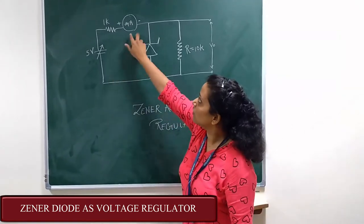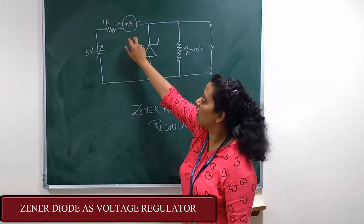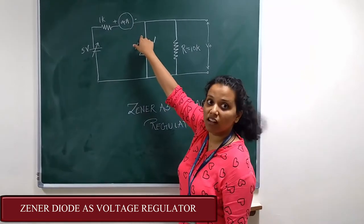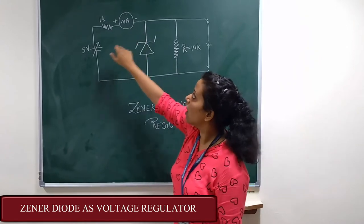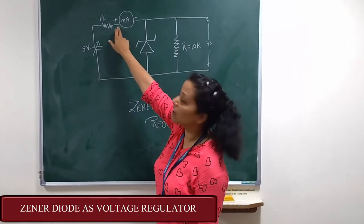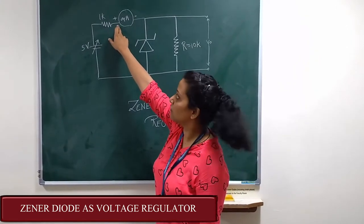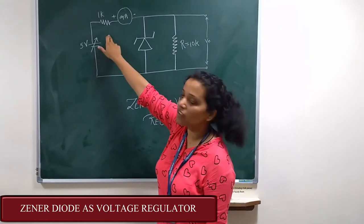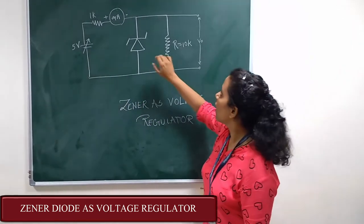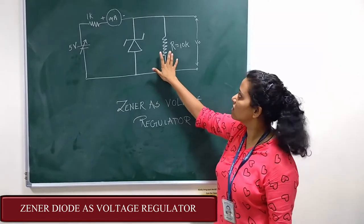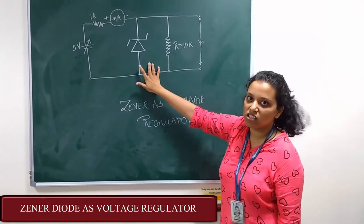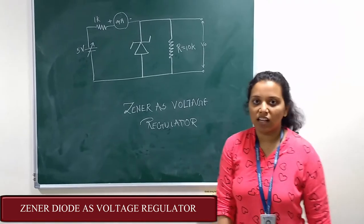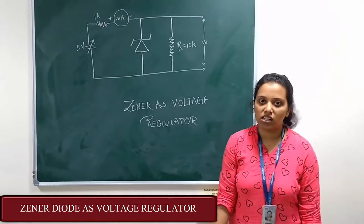Here we are checking the current using a milli ammeter. The negative is given to the negative terminal of the zener diode and a 1k resistance is connected at the positive terminal. A 5 volt input is given, and a 10k resistance is connected in parallel with the zener diode. That's all about the circuit diagram of the zener diode as a voltage regulator.